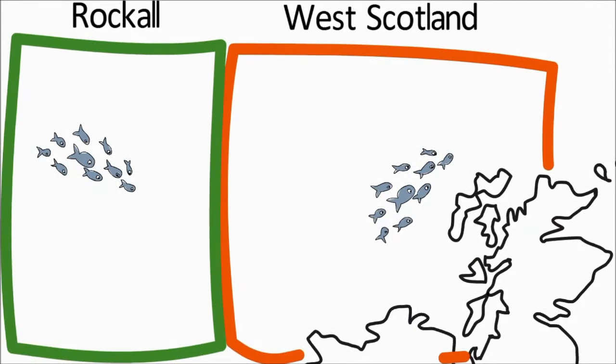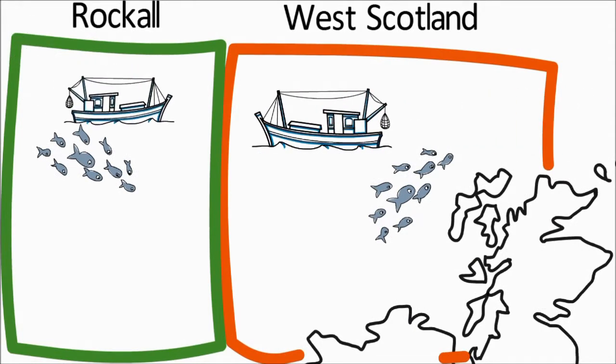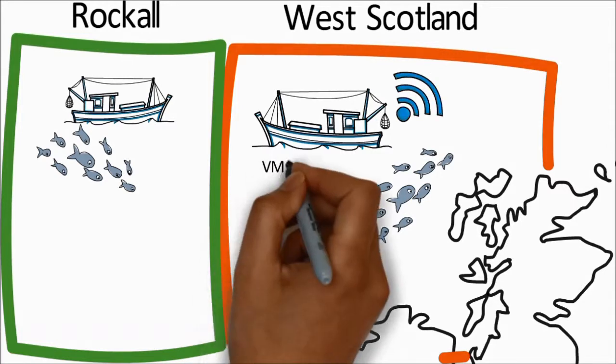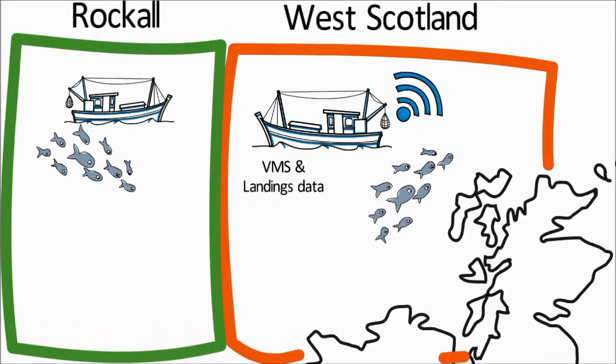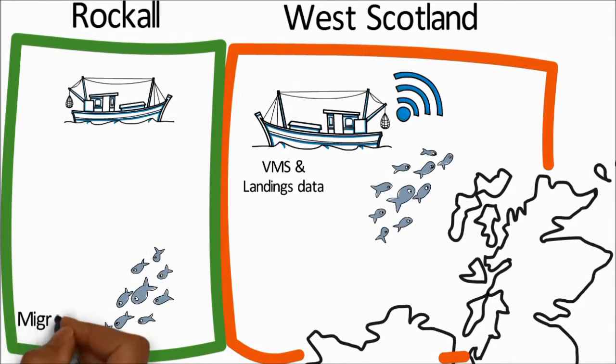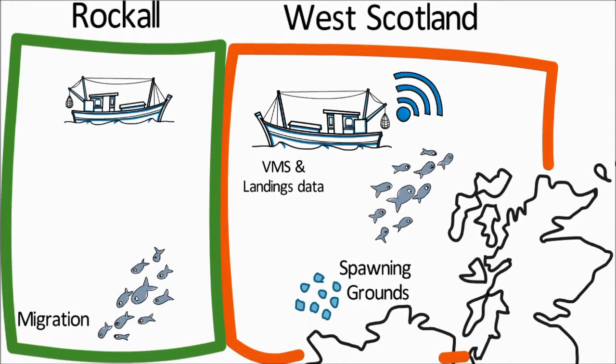When deciding on stock boundaries, the location of fishing grounds is a key piece of information used to identify where one stock ends and another begins and this can be seen from vessel monitoring and landings data. Scientists also consider the migration patterns of fish and spawning grounds as well as genetics in some cases.